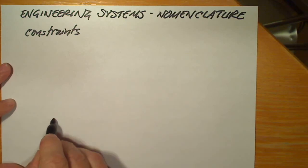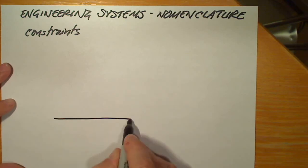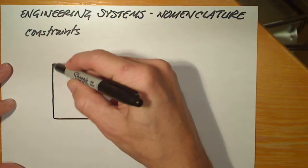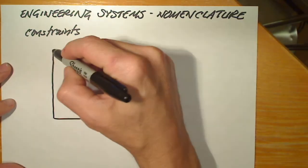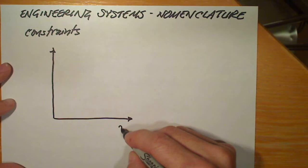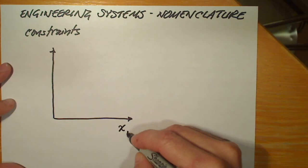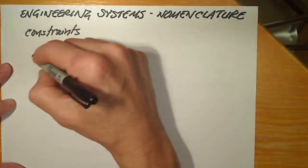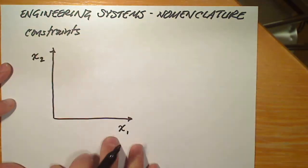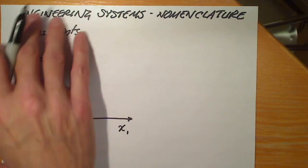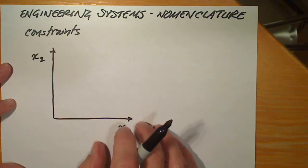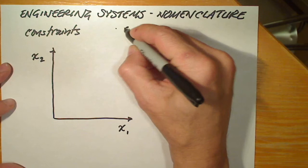Some engineering problems have more than one design variable. As a matter of fact, they all have more than one design variable. For the purpose of convenience, we're going to call the first design variable x1 and the second design variable x2, so that we can demonstrate the different types of constraints. There are three.